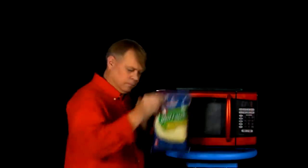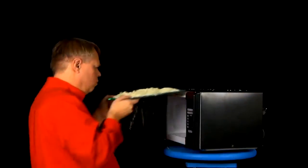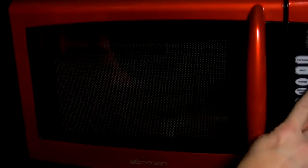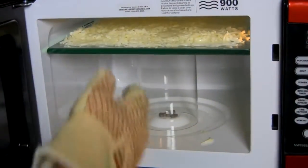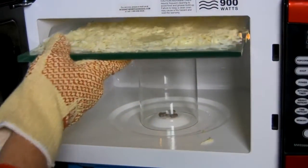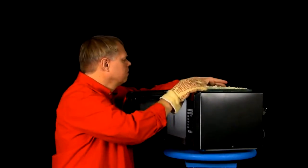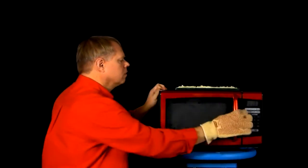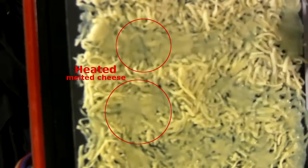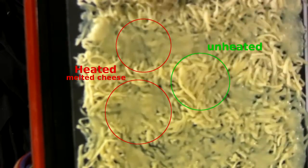Now, you can get an idea of the wavelength of the energy emitted from the magnetron using cheese. Now, you can see on here sections where the cheese is completely melted and other sections where it's completely unheated.